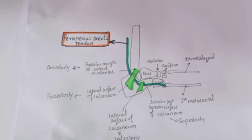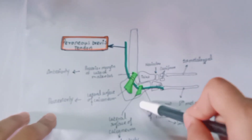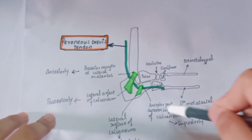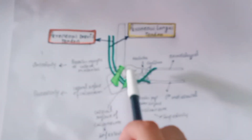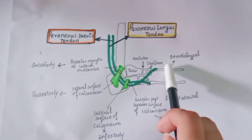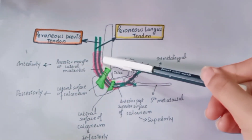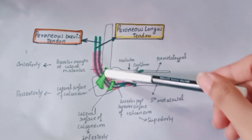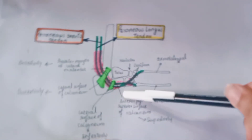The content of the peroneal retinaculum includes two tendons: the peroneus longus tendon and the peroneus brevis tendon. The peroneus brevis tendon passes inferior to both peroneal retinaculum and gets inserted at the base of the fifth metatarsal. The peroneus longus tendon passes inferior to both retinaculum and gets inserted at the base of the first metatarsal. Both tendons are enclosed in a common synovial sheath, but when they pass through the inferior peroneal retinaculum, they get enclosed into their individual synovial sheaths.